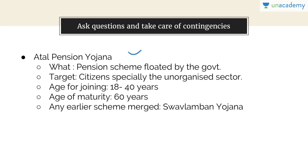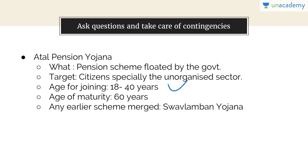Always ask questions to better understand content. For Atal Pension Yojana: What is it? A pension scheme floated by the government. Who is the target? Citizens, especially the unorganized sector. What is the age of joining? 18 to 40 years. What is the age of maturity? 60 years. Which earlier scheme was merged with it? Swavalamban Yojana. Asking the right questions gets the right answers.